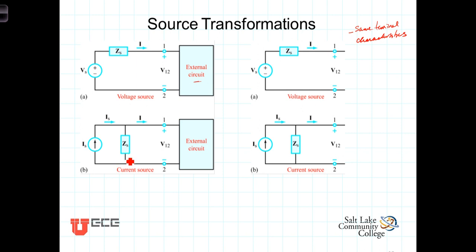Now in both instances, we're going to have the source impedance be the same value. And what we want to do is determine the relationship between V sub S and I sub S so that loads or external circuits connected to either of these would not be able to tell the difference. So they have the same terminal characteristics, that means same voltage and same current.